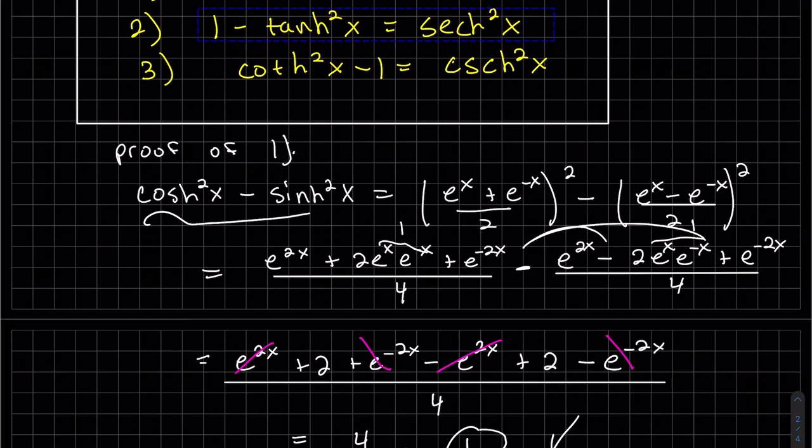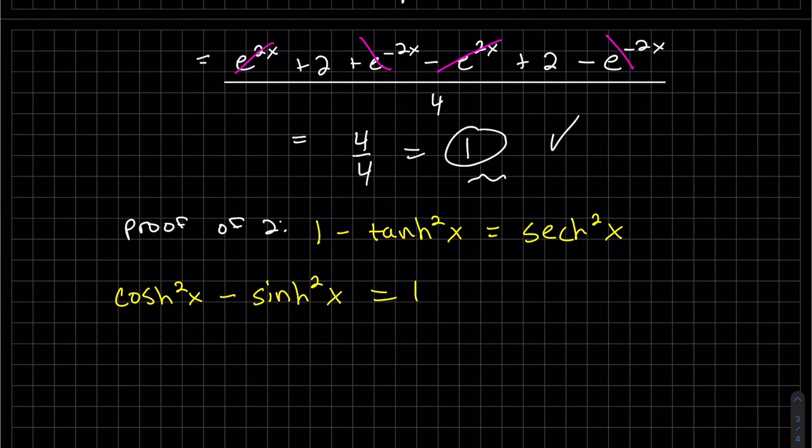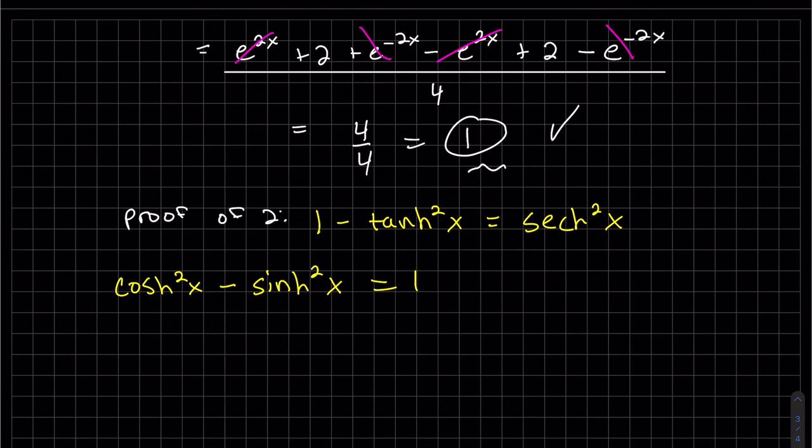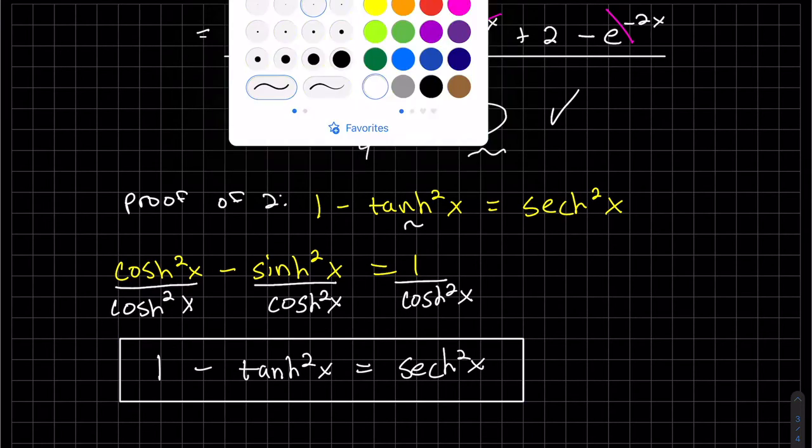So we actually want to prove this. But we're going to use our first one, which we just proved. So this is how we prove our trig identities with sine and cosine. I always take this first one, and I want tangent. So sine over cosine is tangent. But these are hyperbolics. So I'm going to divide through by cosh squared x. Got it.